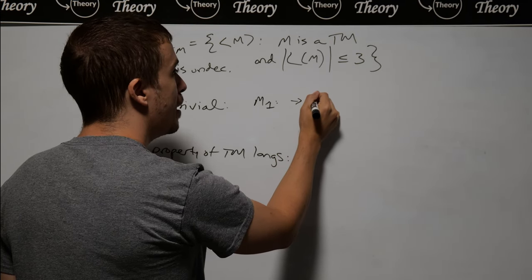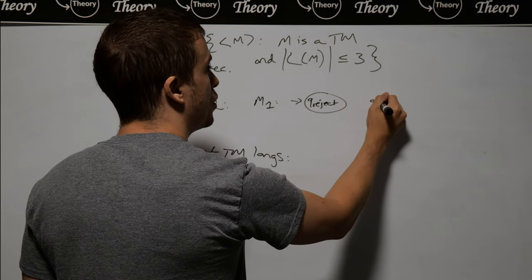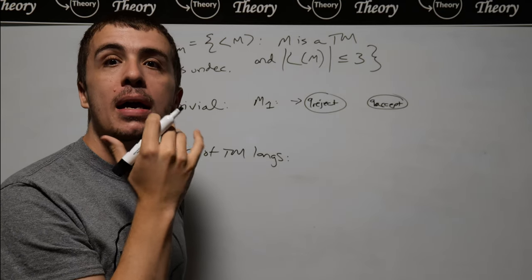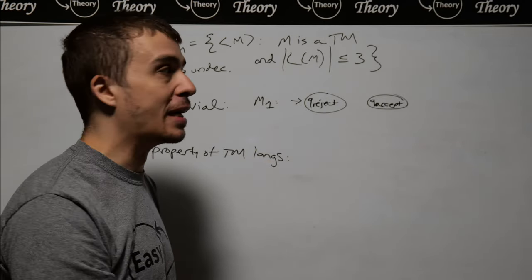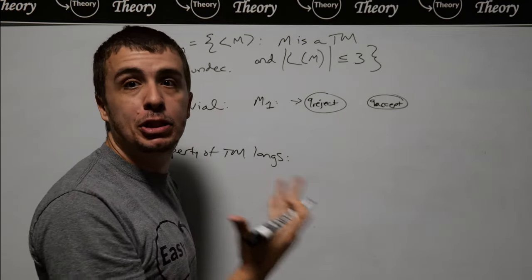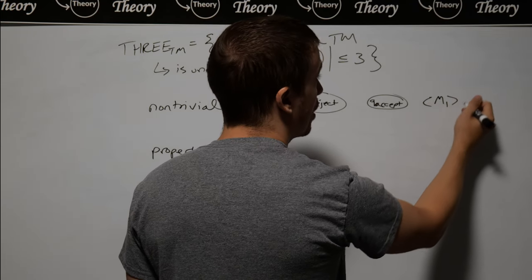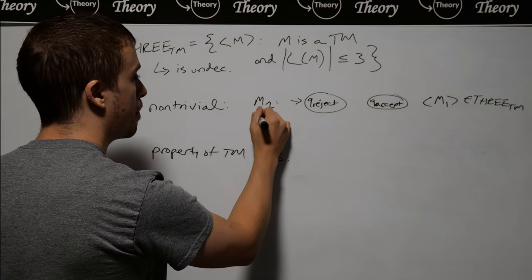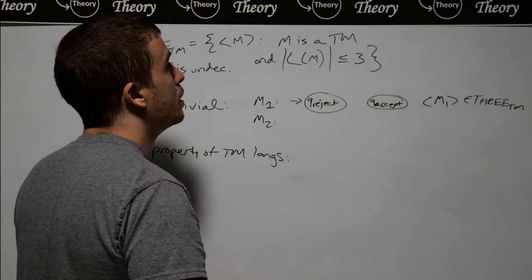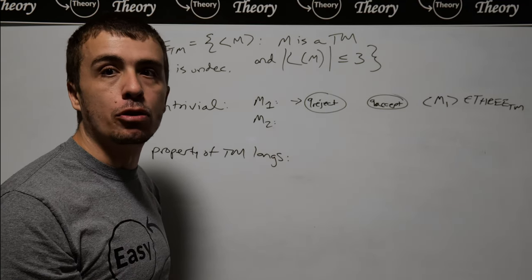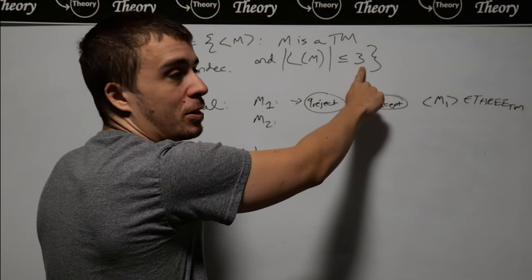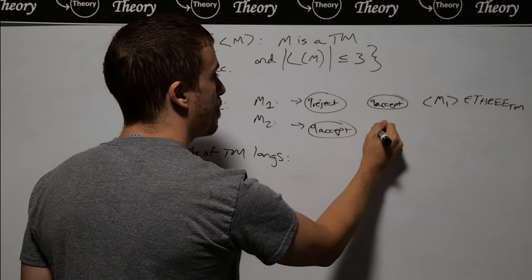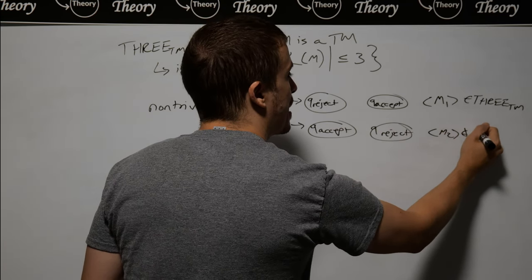So M1's description is in 3TM. Now we need to find a machine that is not in 3TM, which I'll call M2. If we switch those states around, M2 accepts every single string, meaning the number of strings it accepts is much, much bigger than three — namely infinite. So if I swap these around with Q-accept as start state, then M2 is not going to be in 3TM. We've shown 3TM is non-trivial — found something in there and something not in there.